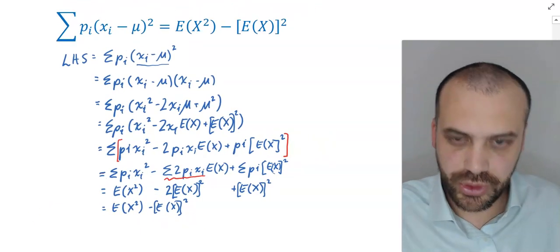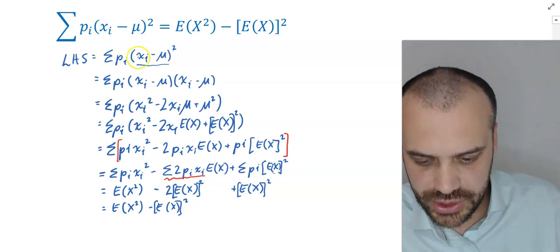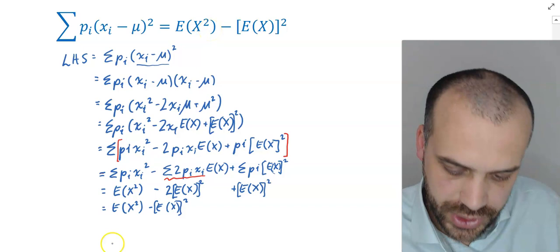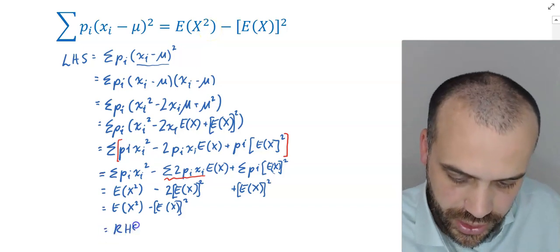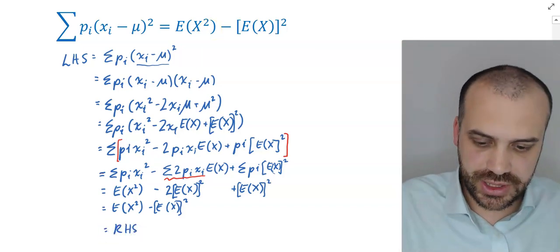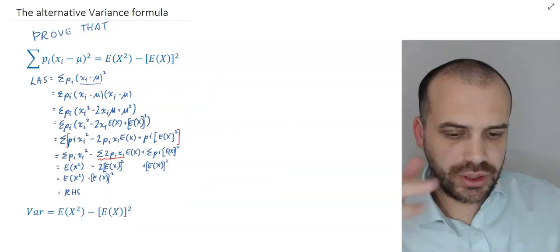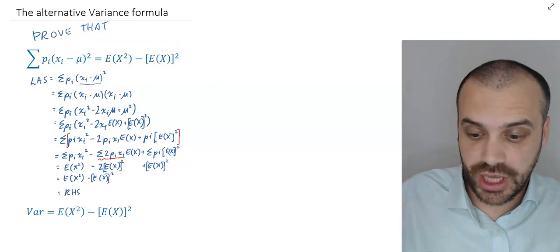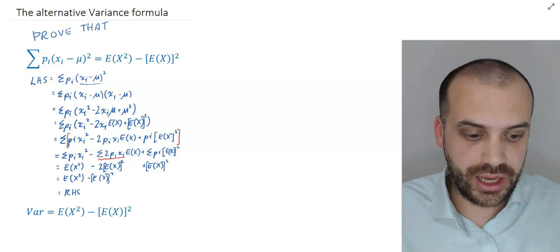And we have now proven that the left-hand side, which is this thing here, is equal to the right-hand side, which is right there. So we have proven this second variance formula. I'm going to take a little break and in the next video I'm going to show you why you would want to have a formula like that in your arsenal.